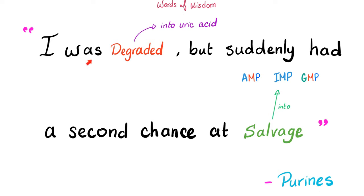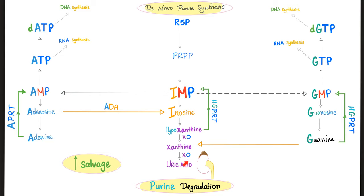Now the purines have a totally different story — the salvage pathway. I was about to be degraded into uric acid but suddenly had a second chance at salvation. Adenosine was about to become degraded into uric acid but we saved it, redeemed it, recycled it, salvaged it. The enzyme APRT — adenosine phosphoribosyltransferase — converts adenine back to AMP.